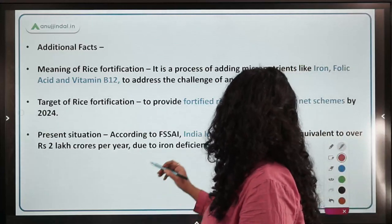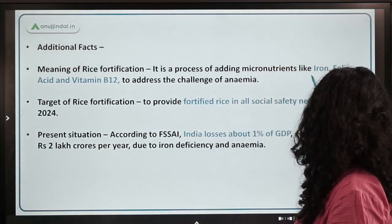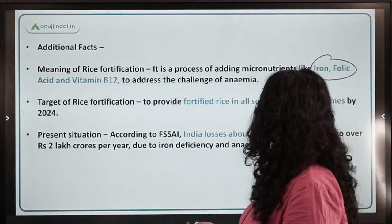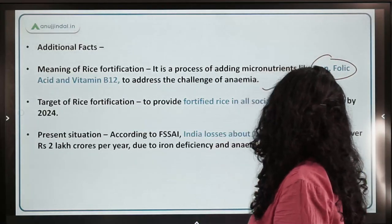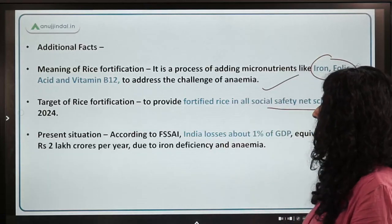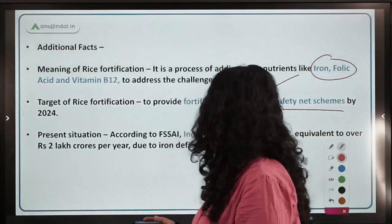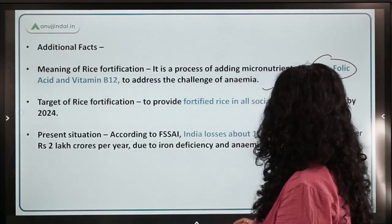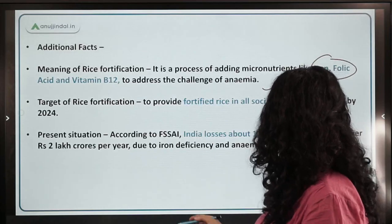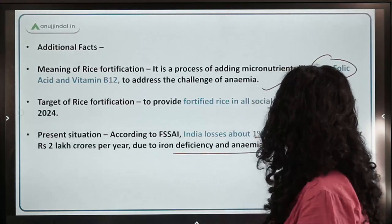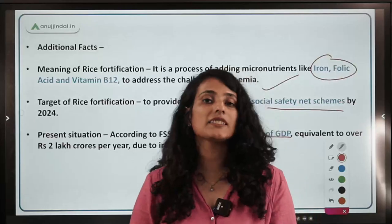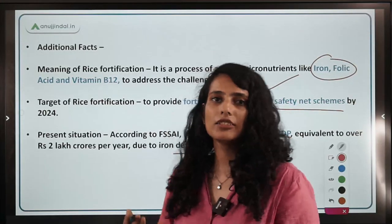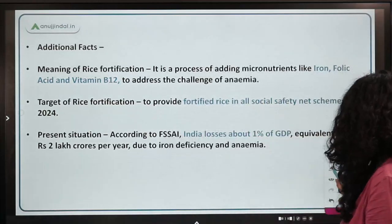Rice fortification is a process of adding micronutrients to rice. It is a social safety net scheme under which India loses about 1 percent of its GDP due to iron deficiency and anemia. Anemia is very prevalent in India among children and young girls, so fortified rice is quite beneficial for them.